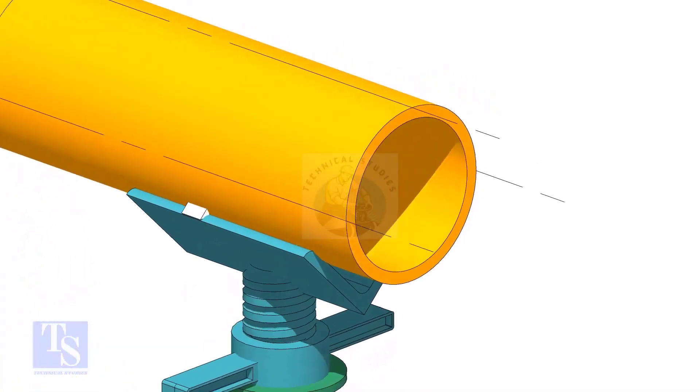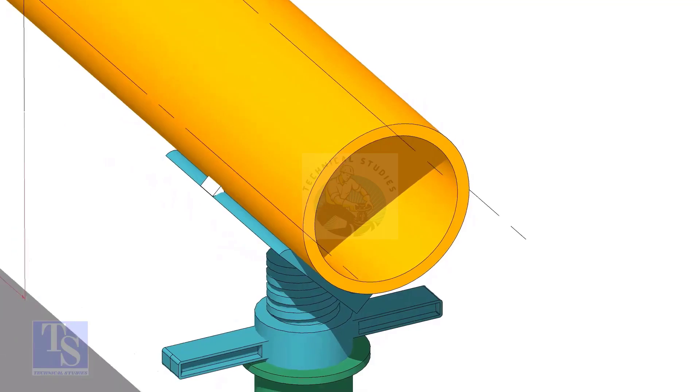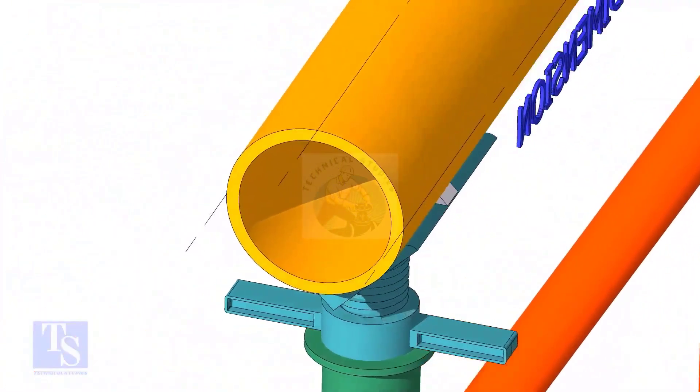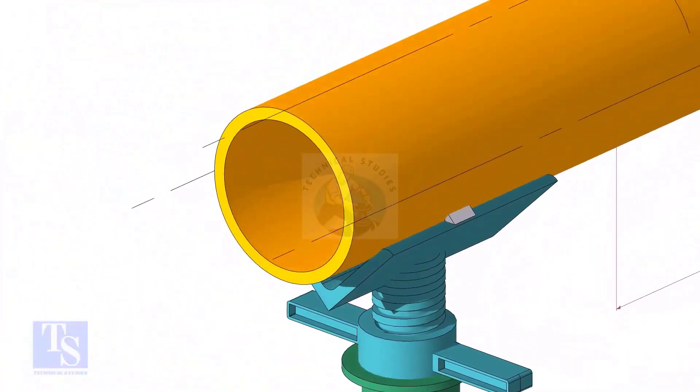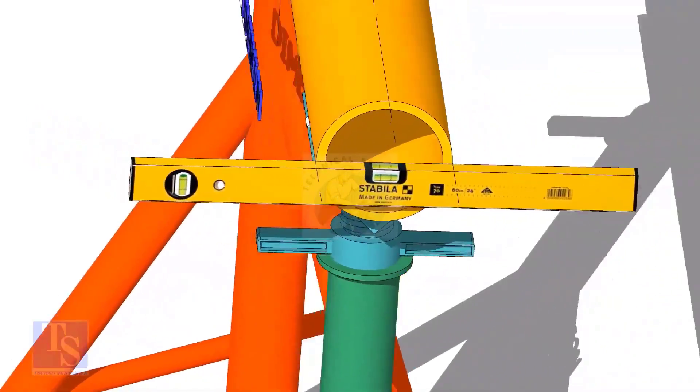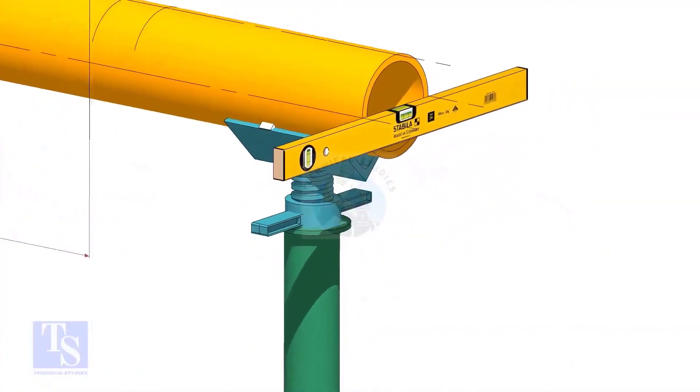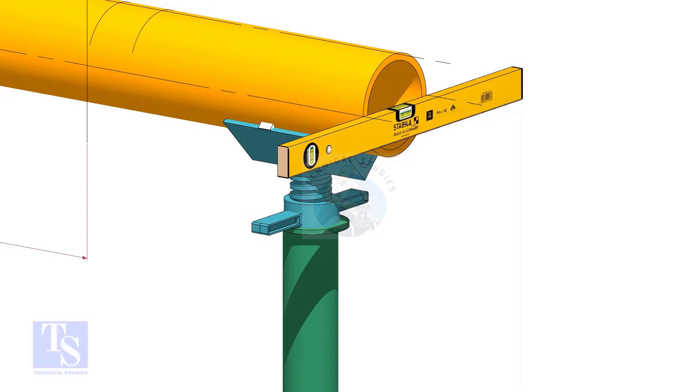After leveling the pipe, mark the center line and two quarter lines. Arrest the pipe, and if required, make small tack welds.